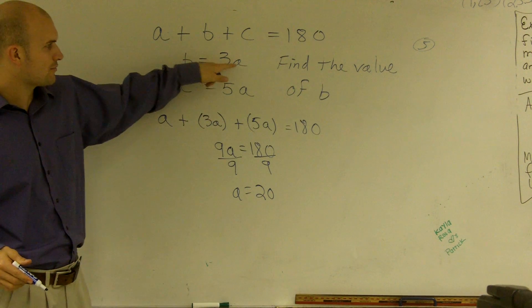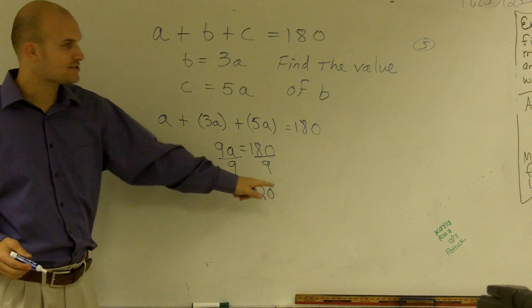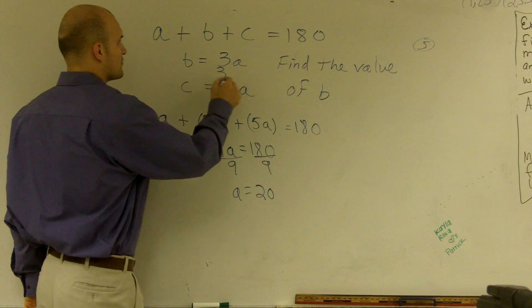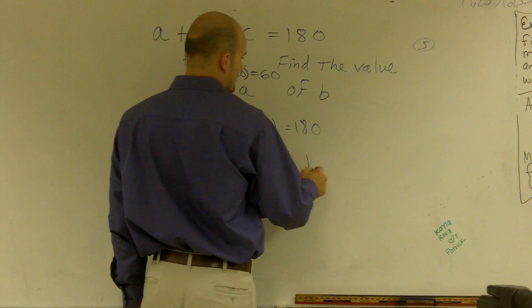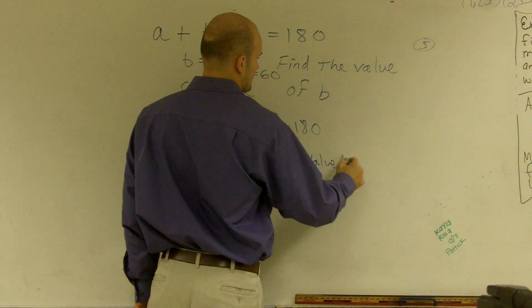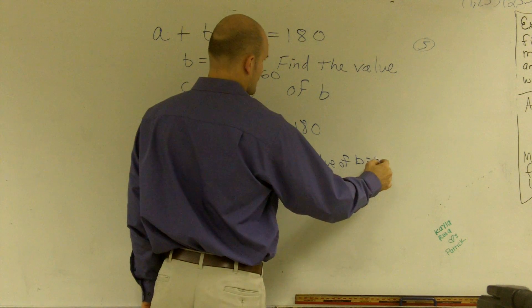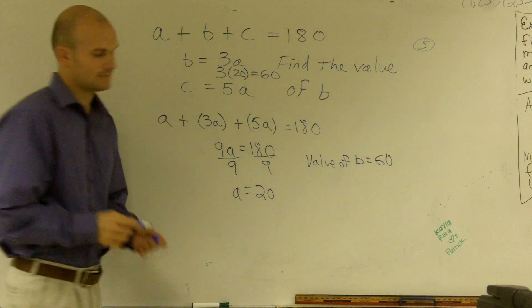Well, b is 3 times a. Well, a is 20. So b is 3 times 20, which is going to equal 60. So the value of b is equal to 60. And that's it.